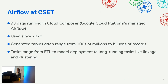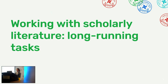Right now we have about 93 DAGs running in Cloud Composer — we use GCP's managed Airflow. We've used Airflow since 2020. The tables we generate often range from hundreds of millions to billions of records. The tasks we do are often ETL, but we also do model deployment and orchestrate longer-running tasks like linkage and clustering.